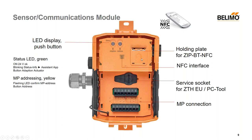Another convenient feature is a magnet used to hold what we call the ZIP-BT-NFC — essentially a Bluetooth dongle. If you want to do commissioning via the Assistant app and you have either an Apple phone or an Android where you don't want to hold it up to the product, you can just snap this dongle into place. The magnet will hold it regardless of what position the actuator or sensor and communications module is in, even if it's upside down, so you could be on the ground in a comfortable position. If you still wish to use Belimo's PC tool, there is a service socket where you can plug in as well.